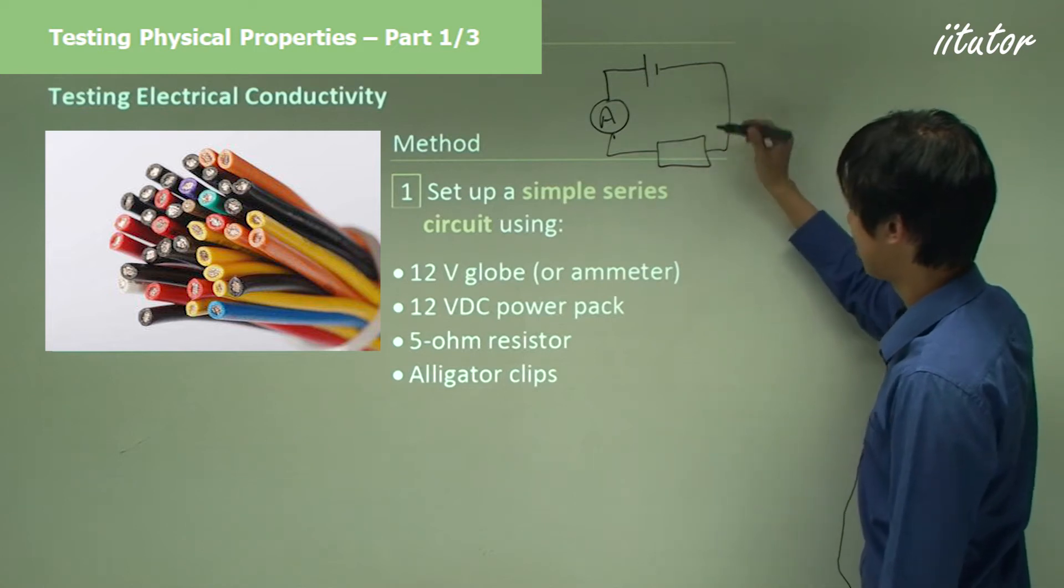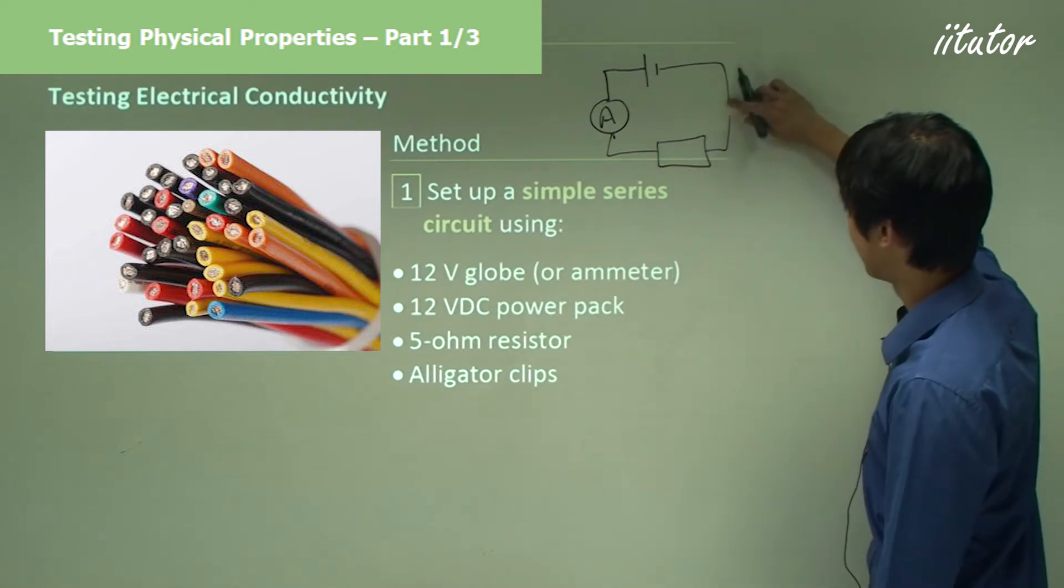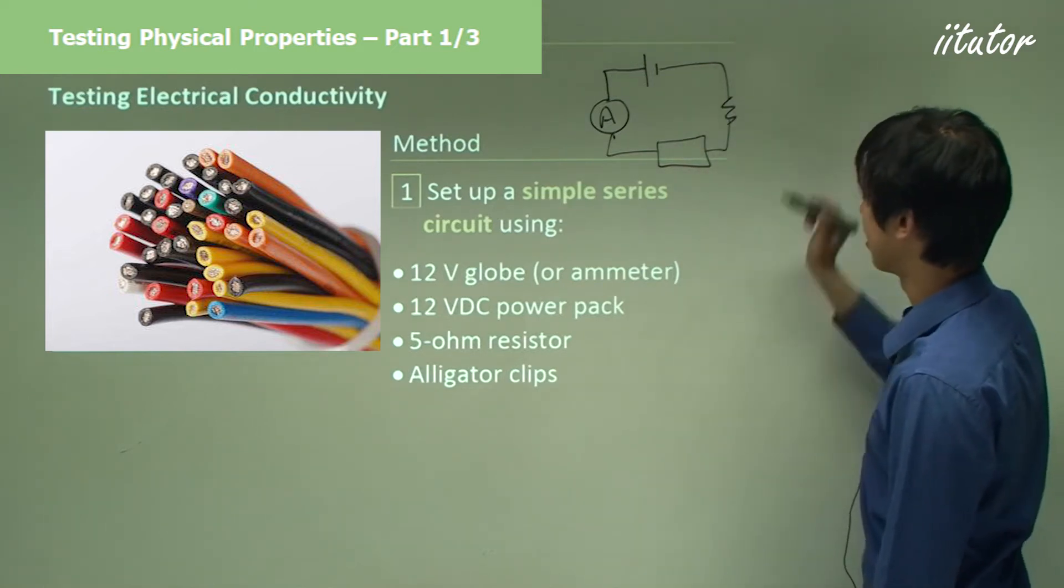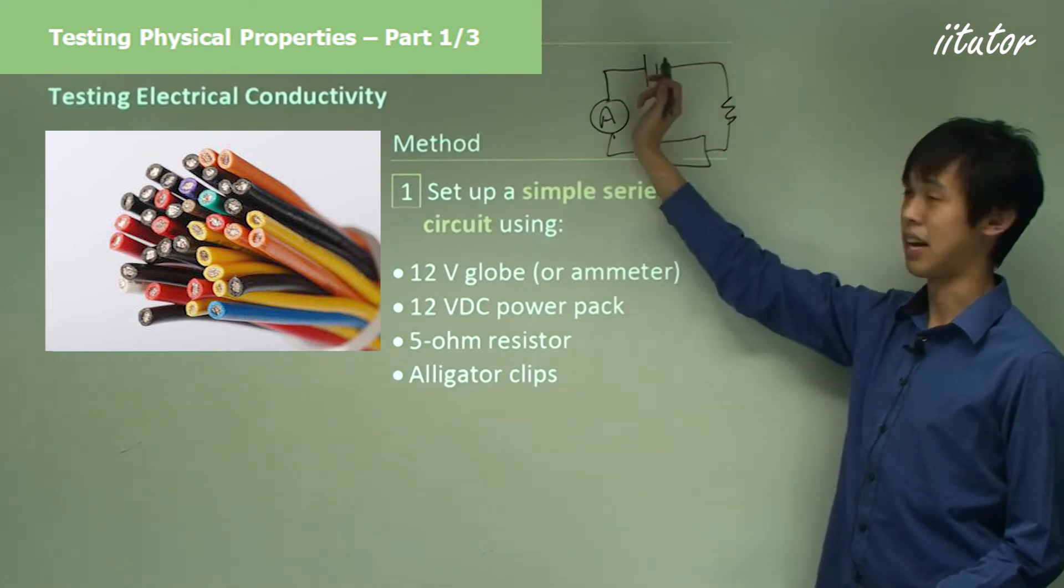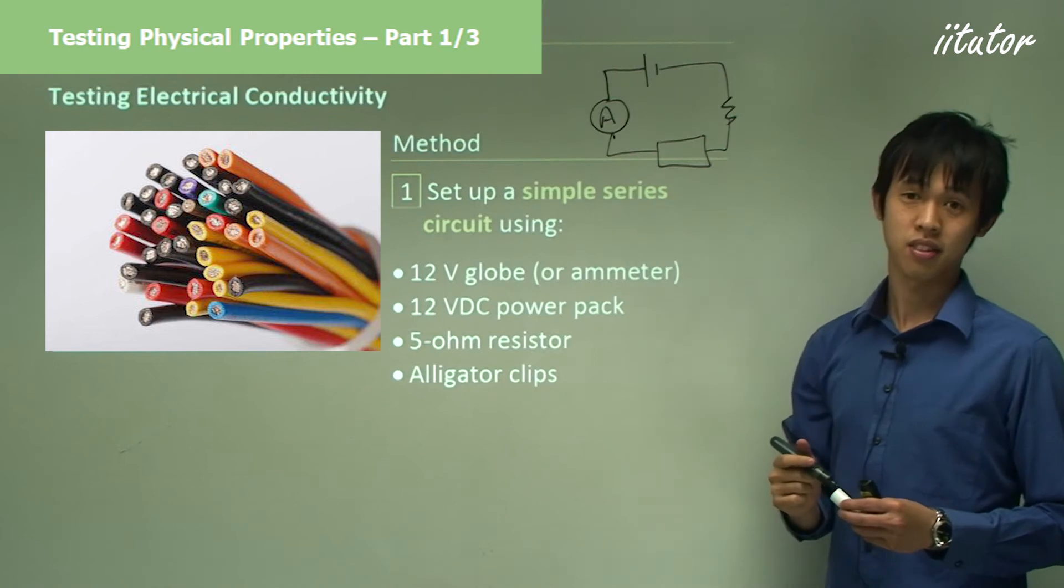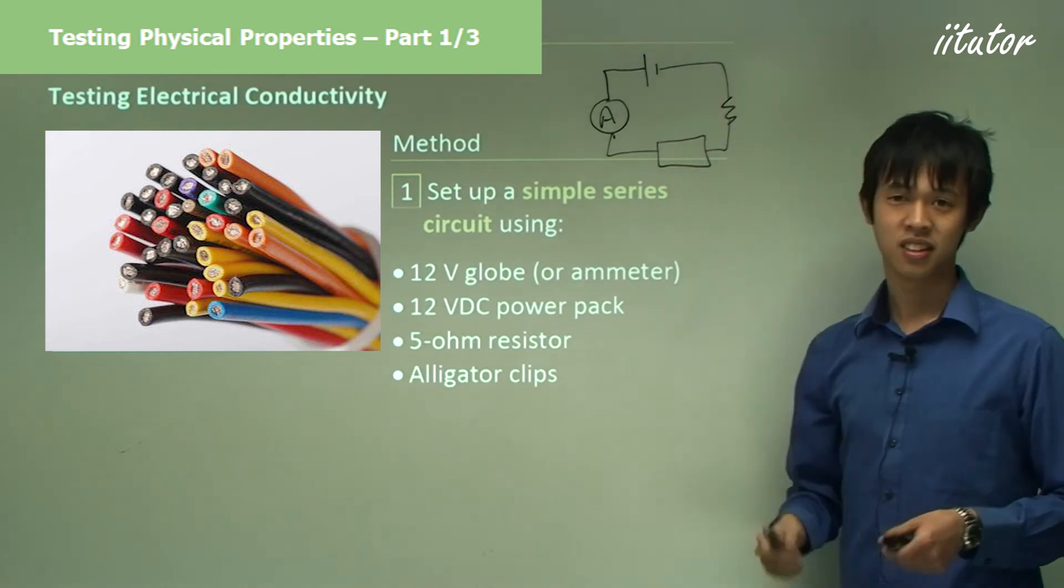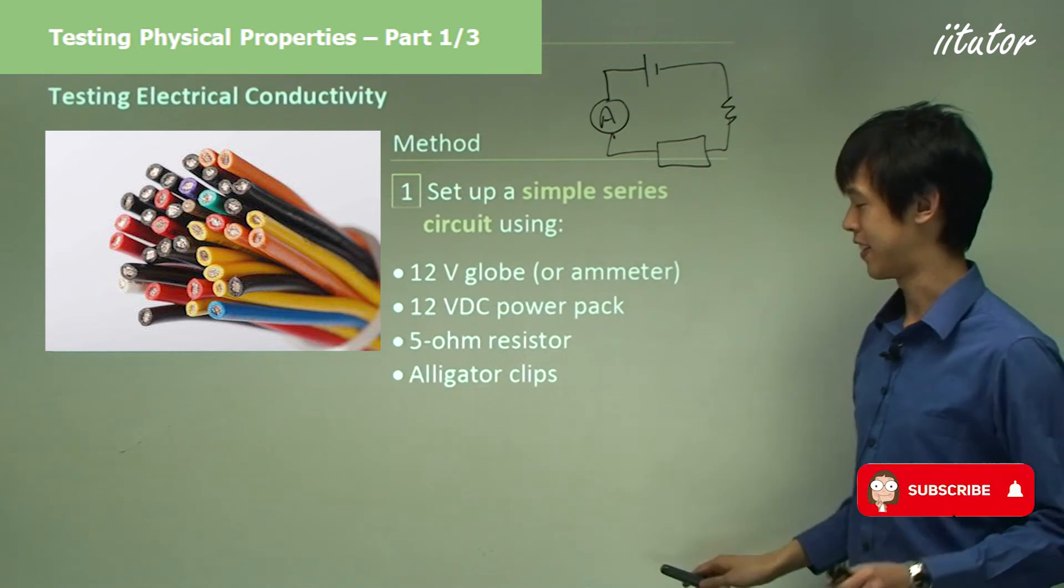Our resistor goes there. So this is our resistor, our ammeter, our sample, and our battery. All we have to do is connect wires to each of these. Very easy.